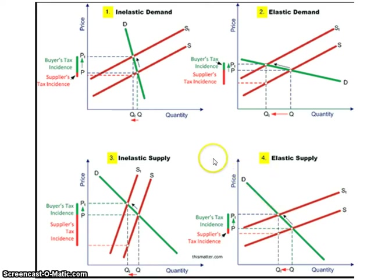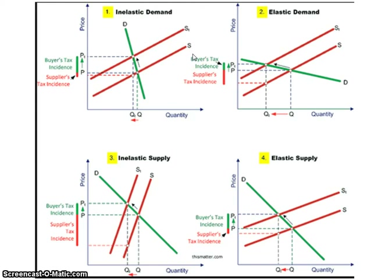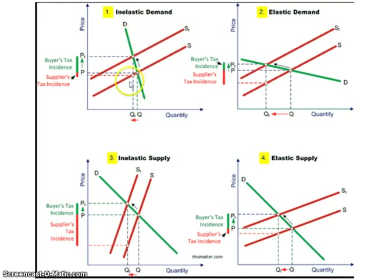If you have the same amount of elasticity between demand and supply, then the tax will be split 50-50. If you have a perfectly inelastic demand curve, you are not going to have a change in quantity. If you have a perfectly inelastic supply curve, you are also not going to have a change in quantity because the curve is completely vertical. As a result, all of the burden will fall on whoever has the perfectly inelastic demand or supply.